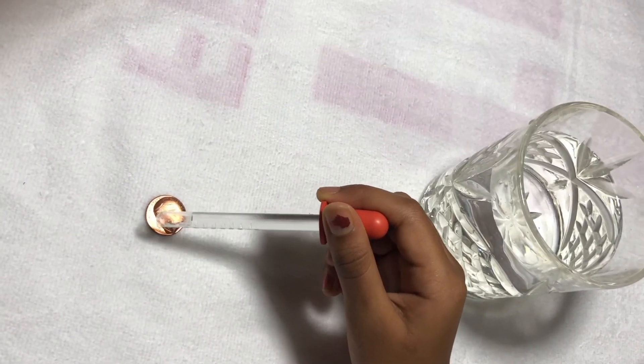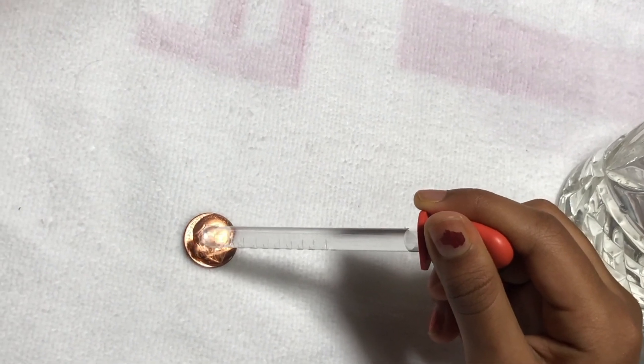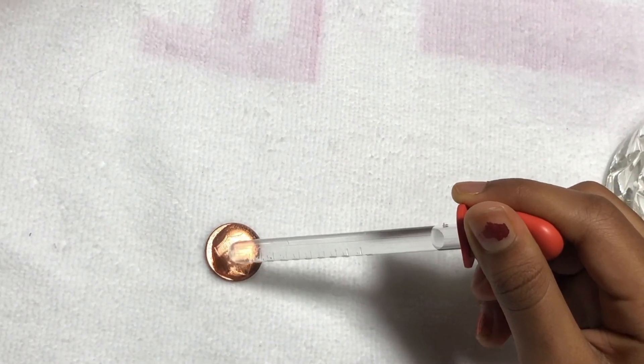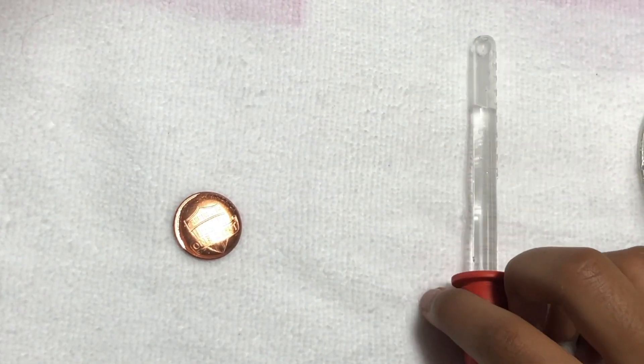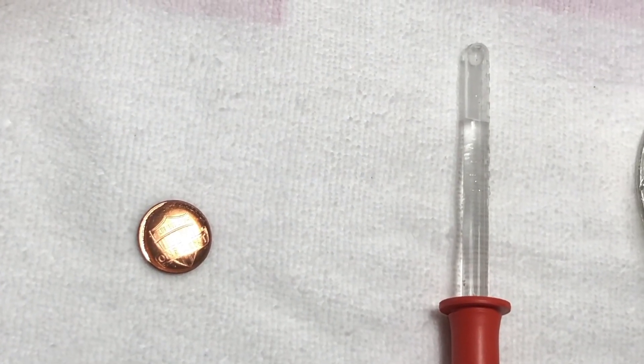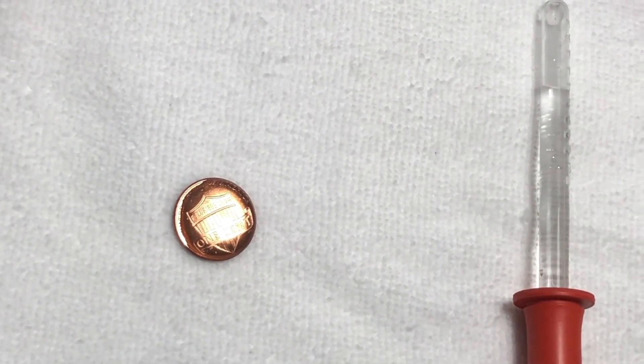So here the water molecules form a layer which is dome-shaped, and this is due to surface tension. So this is how we can demonstrate surface tension. Fun facts! Did you know that low surface tension makes water molecules evaporate?